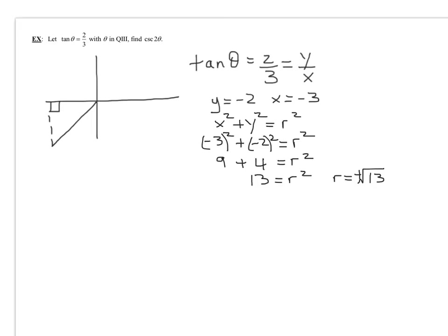So now I know on this picture, r is the square root of 13, x is negative three, and y is negative two. We're asked to find the cosecant of two theta.